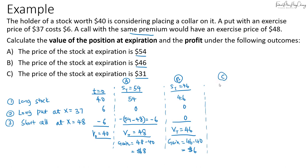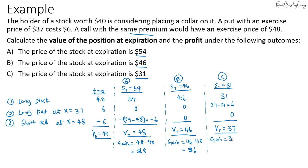In Scenario C, the spot price is $31, so the stock drops from $40 to $31. The put option can be exercised, giving a payoff of $37 minus $31, which is $6. The call option cannot be exercised, so the value of the collar is $37. The gain is $37 minus $40, so we only lose $3.